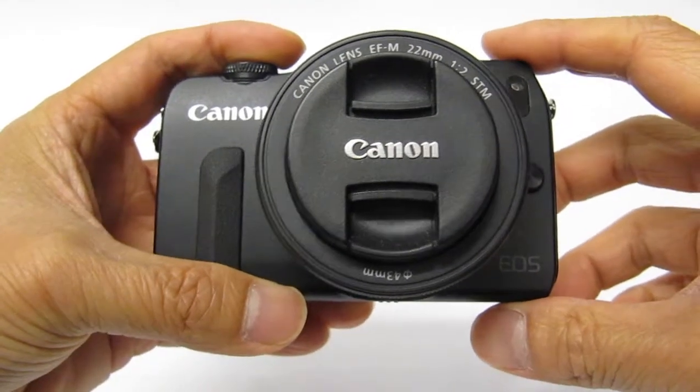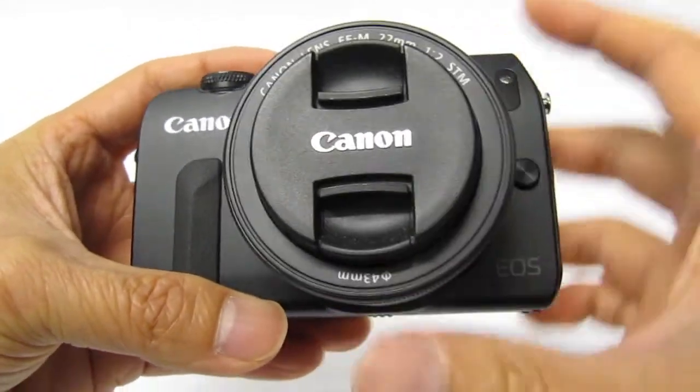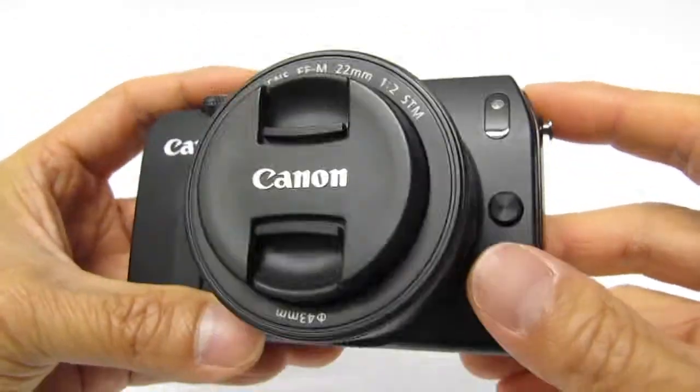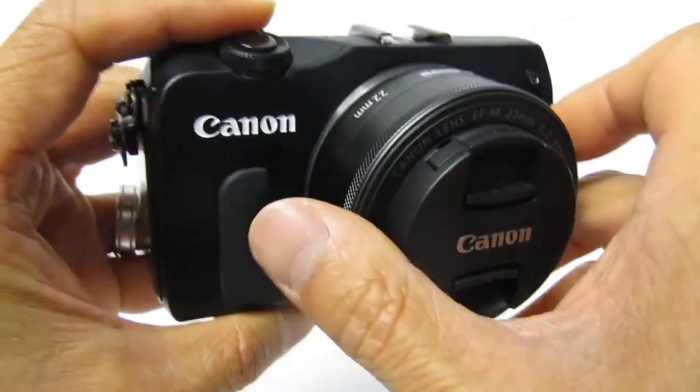This is just a quick video to show you some wrist strap options you can use when you are trying to find a wrist strap for your Canon EOS M. The neck strap is okay, but for the size of this camera I'd prefer a wrist strap.